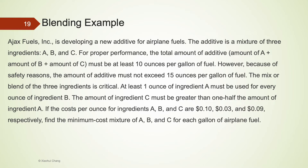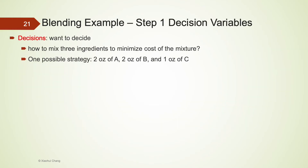Pause the video and see whether you are able to formulate this linear programming problem on your own. Using the hints given on screen, try to set up the problem. To define the decision variables, the company attempts to mix 3 ingredients to minimize the cost of the resulting mixture. One trick is to come up with one possible strategy — for example, mix 2 ounces of A, 2 ounces of B, and 1 ounce of C.